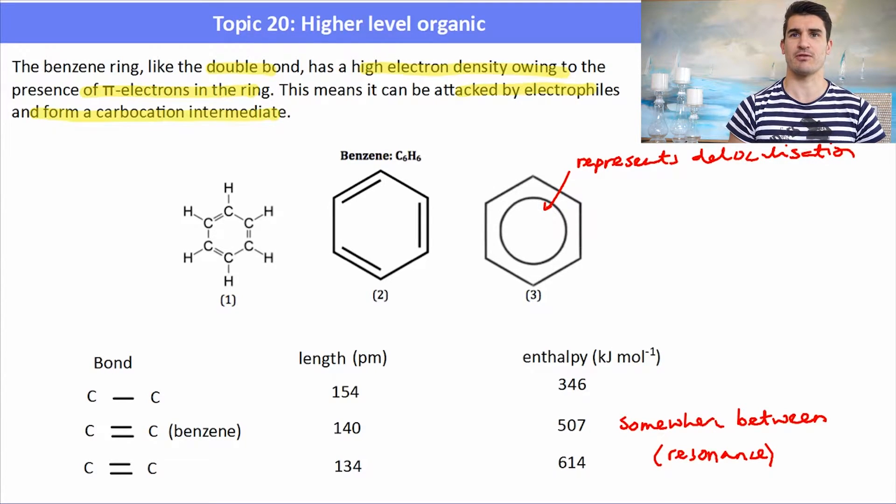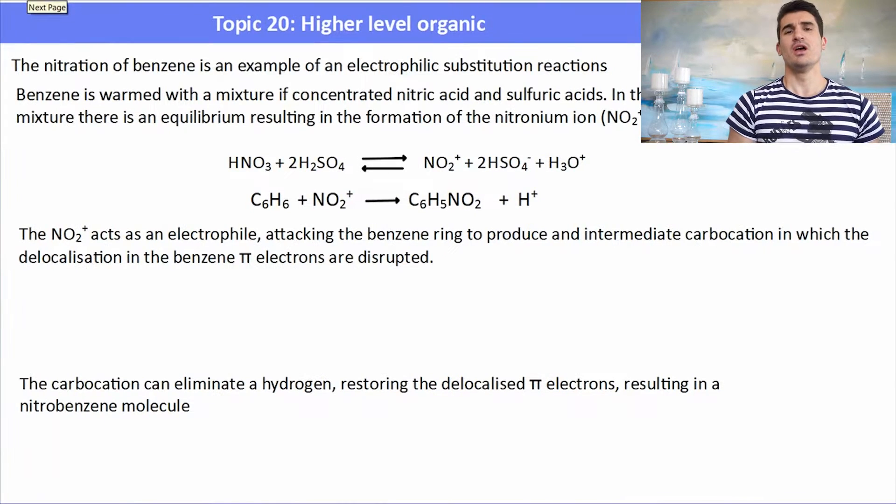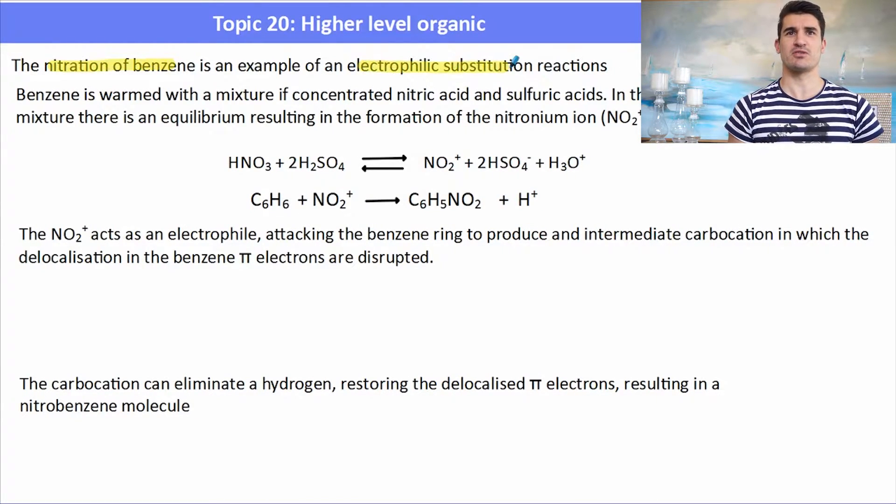The nitration of benzene is an example of an electrophilic substitution reaction. Benzene is warmed with a mixture of concentrated nitric and concentrated sulfuric acids and in the process forms the nitronium ion (NO2+). When we have those two things, we have an equilibrium process, and the nitronium ion is what will undergo the substitution reaction with benzene.